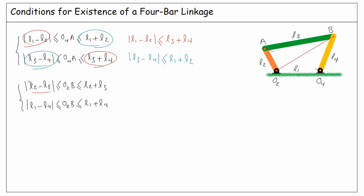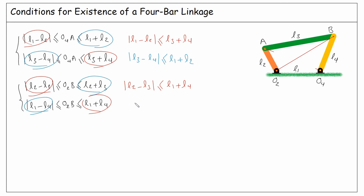Since the absolute value of L2 minus L3 is less than O2B, and O2B is less than L1 plus L4, we can say the absolute value of L2 minus L3 is less than or equal to L1 plus L4. And similarly, since the absolute value of L1 minus L4 is less than O2B, and O2B is less than L2 plus L3, we can say the absolute value of L1 minus L4 is less than or equal to L2 plus L3.